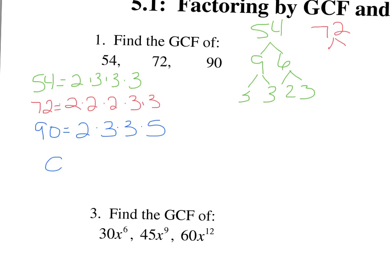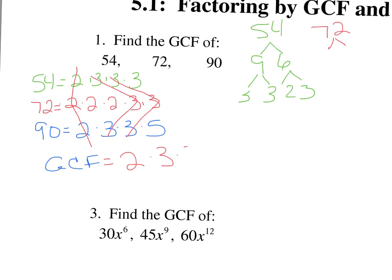Now the GCF is what these factors have in common. They each have at least one 2, so the GCF will have a 2. It looks like they each have at least two 3s — there are two 3s in common. And that's it. So when we multiply those together, we get 18. The GCF is 18.